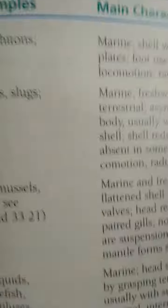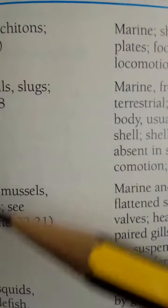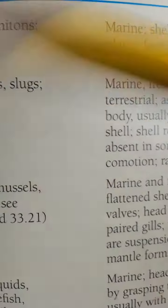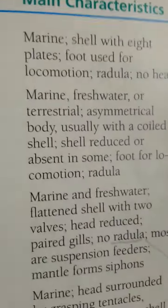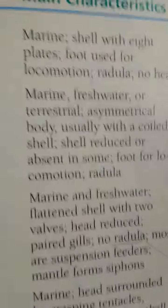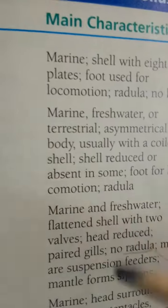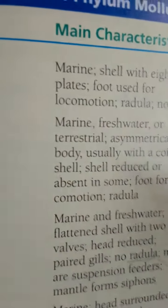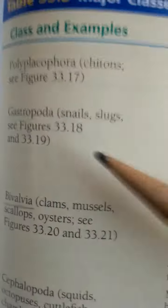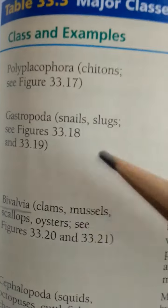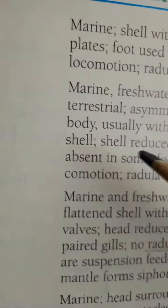Welcome to biology, the study of life. This table represents major classes of Phylum Mollusca. Class one: Polyplacophora — example, chitons. Main characteristic: marine, shell with eight plates, foot used for locomotion, radula. No head. Another example: Gastropoda — snails and slugs. Characteristics include